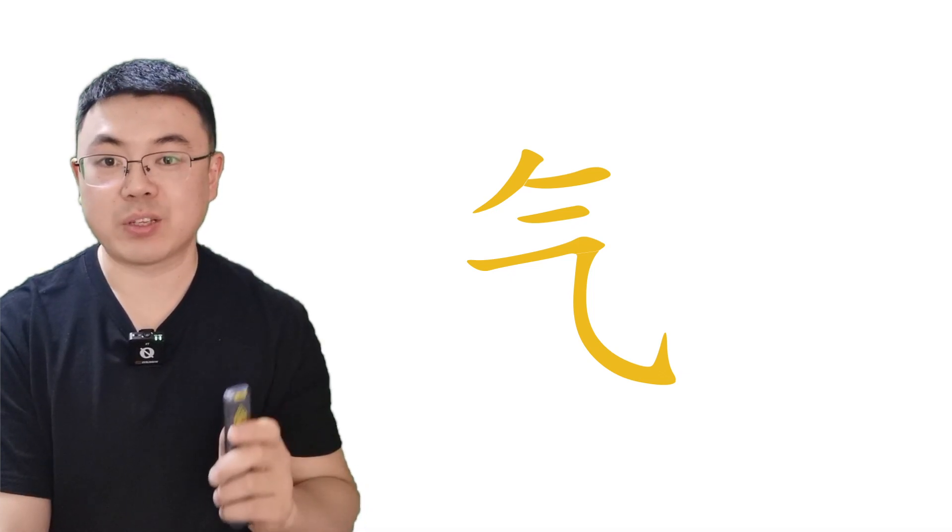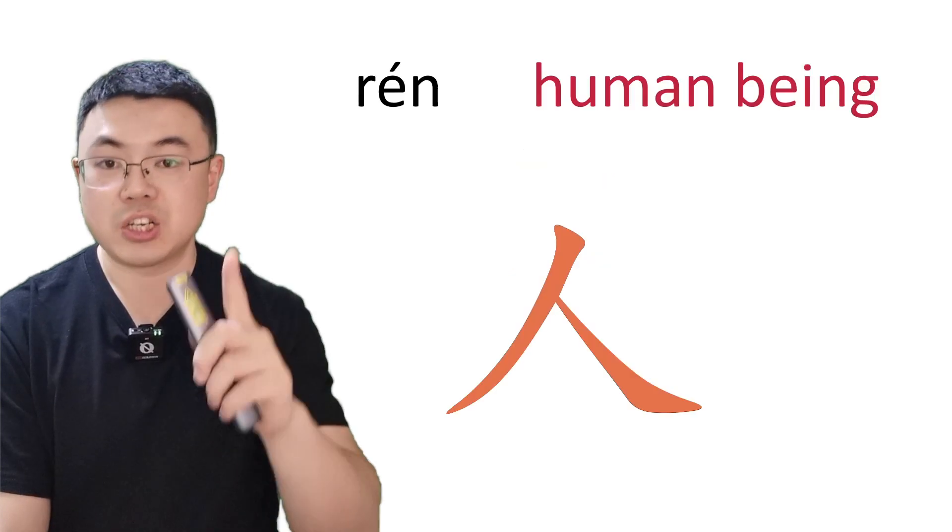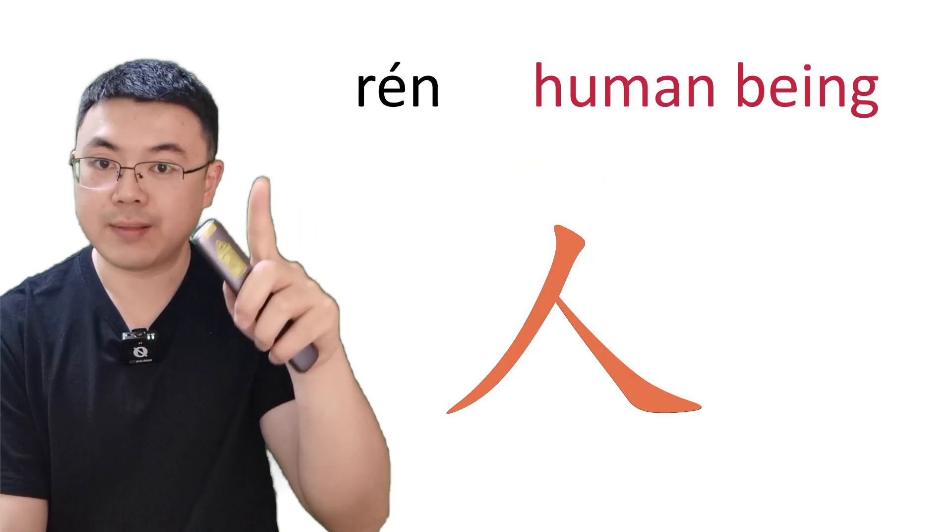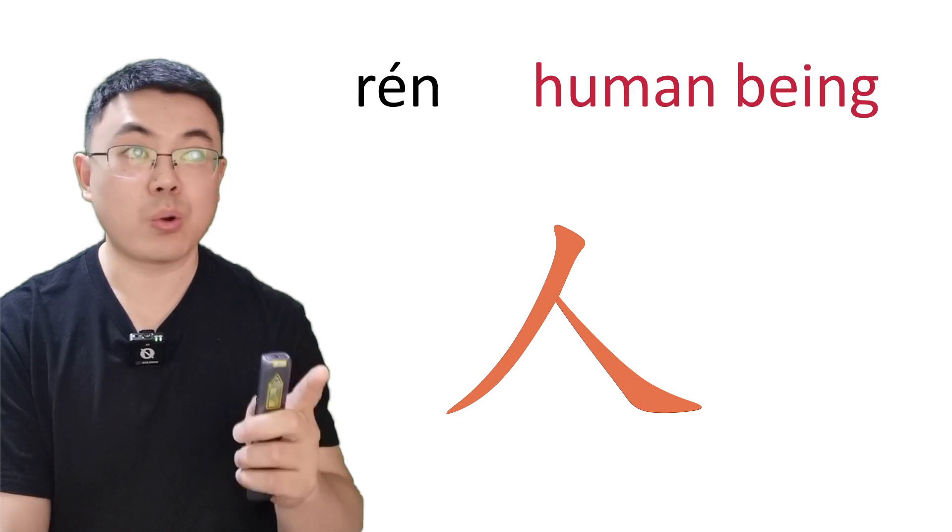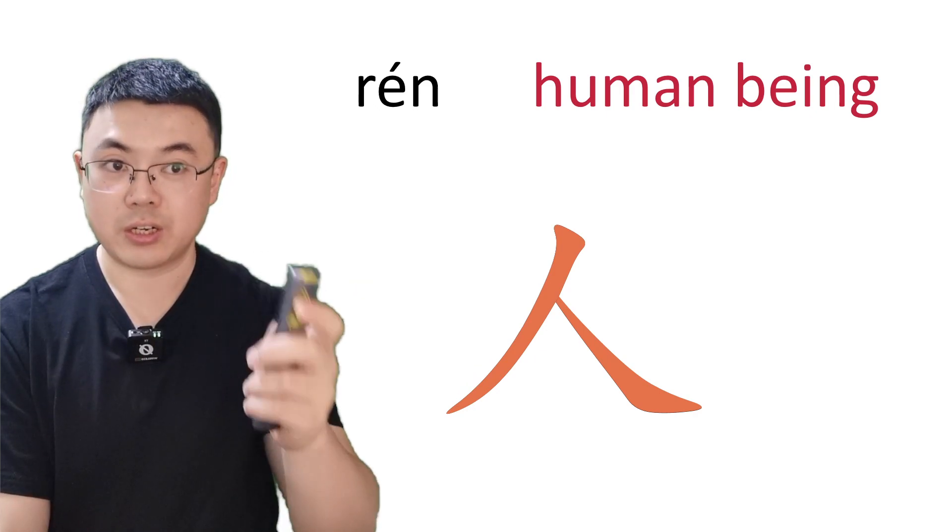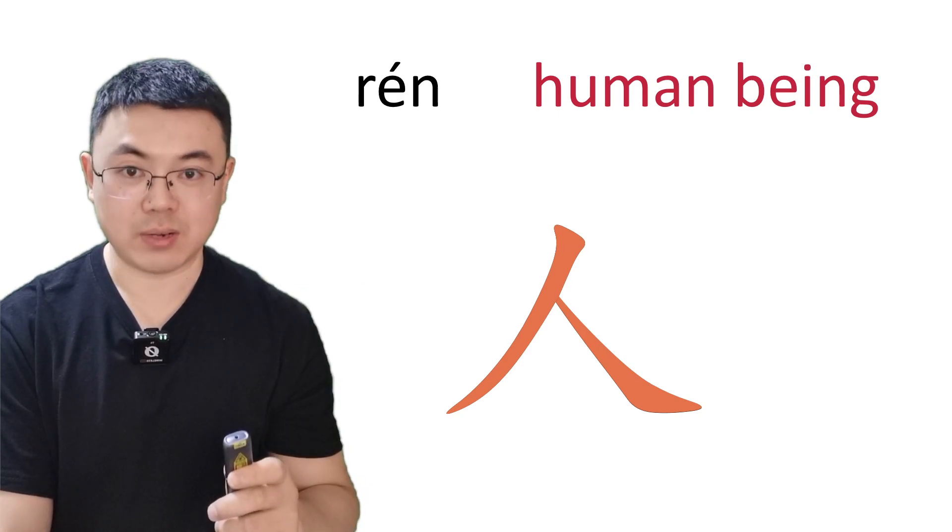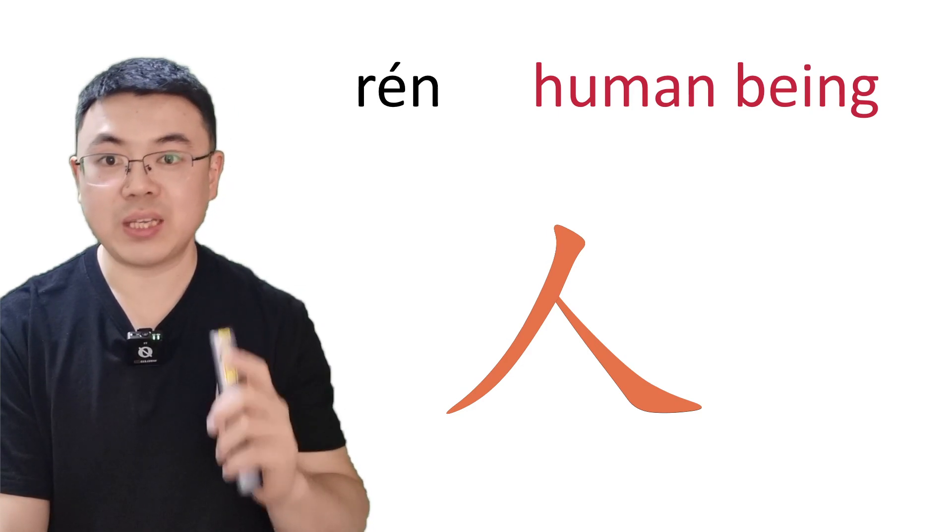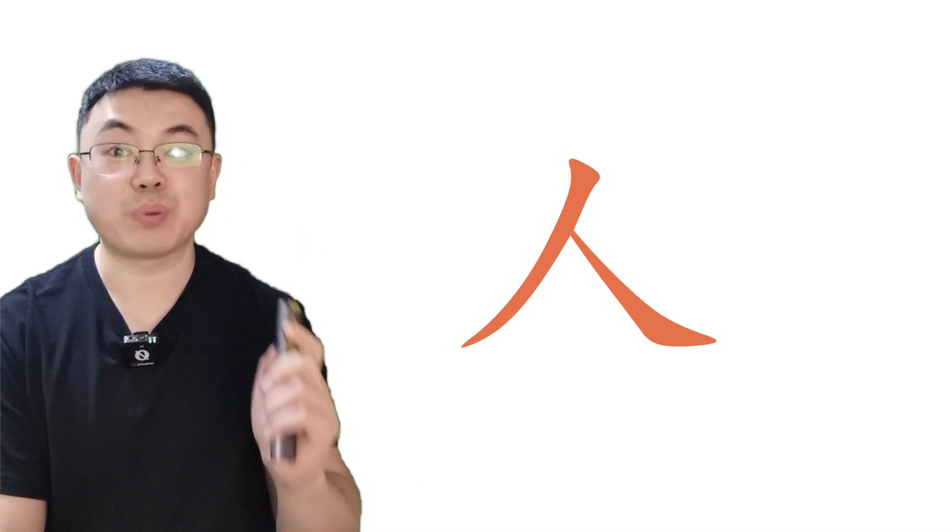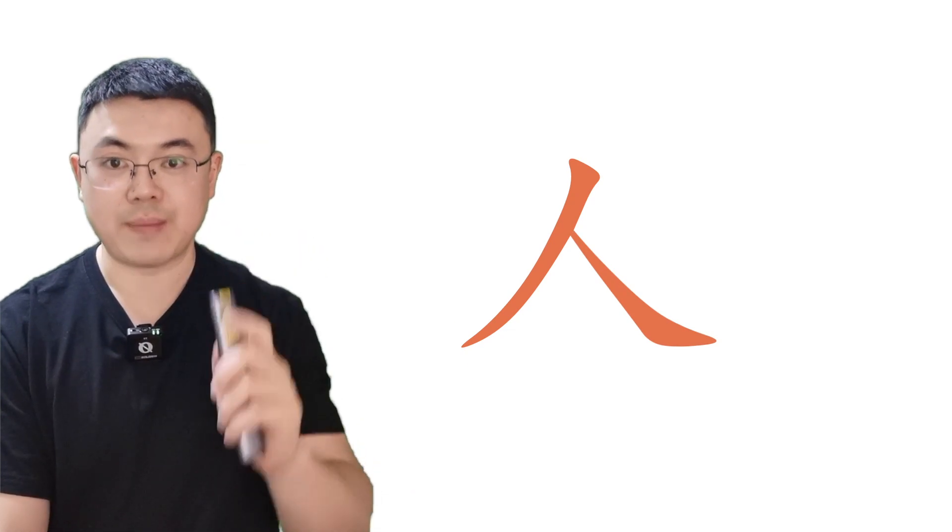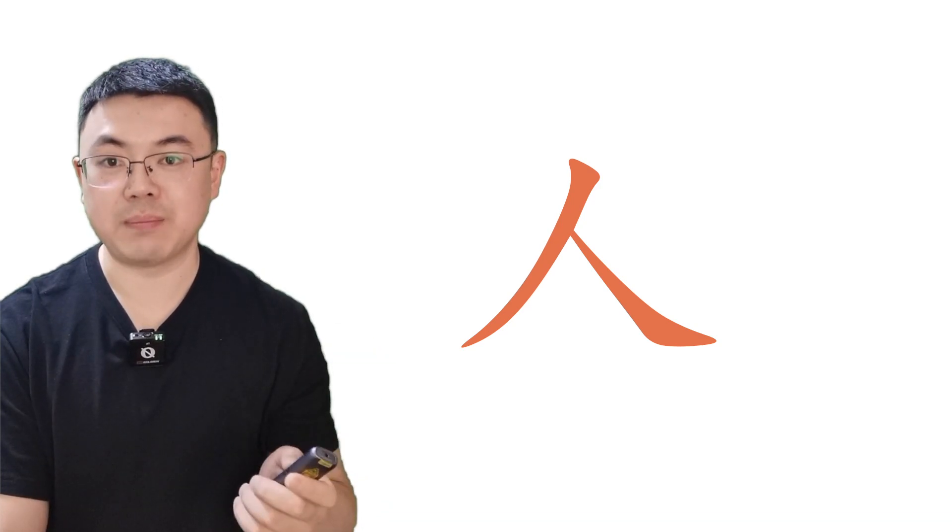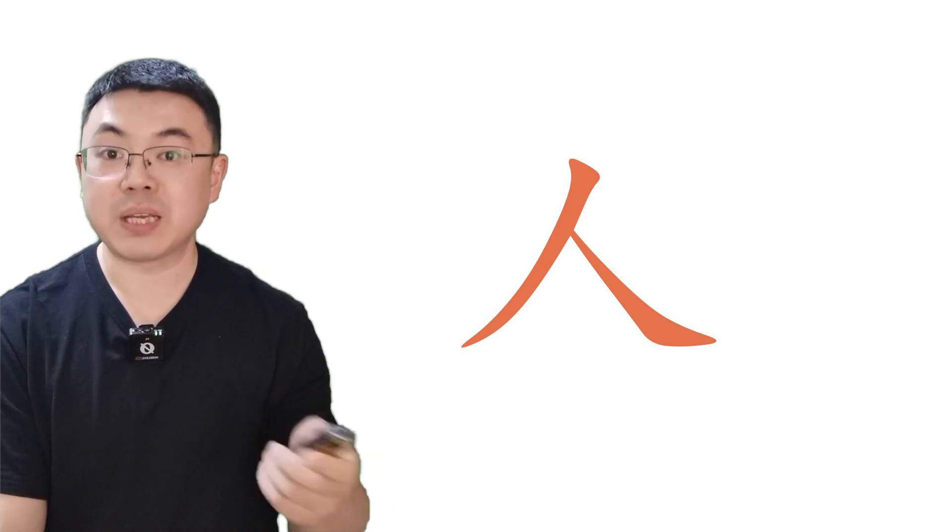Last character. Let's read together. Ren. Ren means people or person or human being. Look at this character. It's just like someone is walking, right? And it is very easy to be written. Follow me. Pie, na. Just like a person. Ren means people or human being.